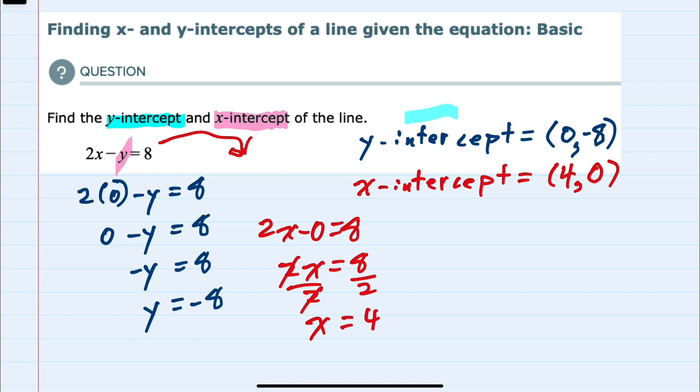So by plugging in those zeros and solving for the other value, we were able to find both the x and y intercepts.